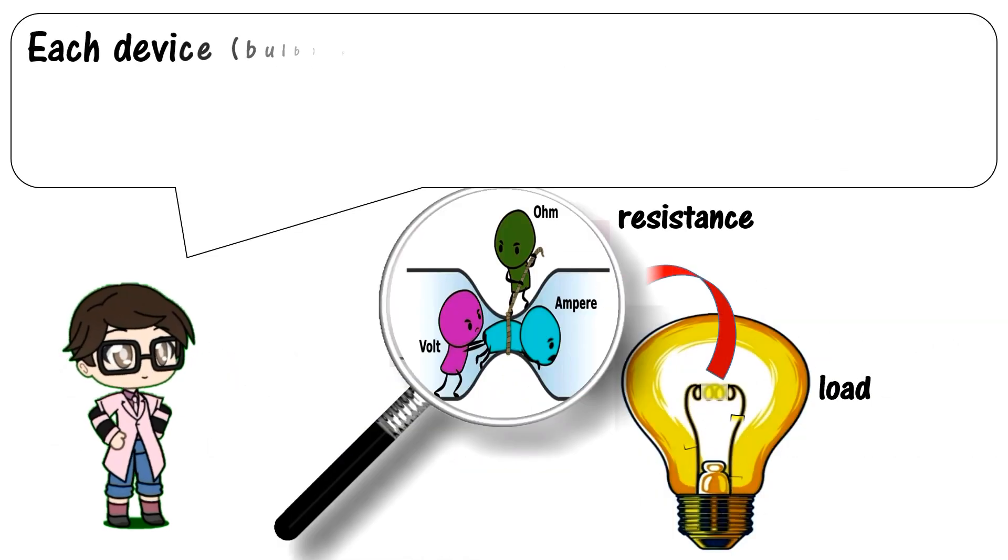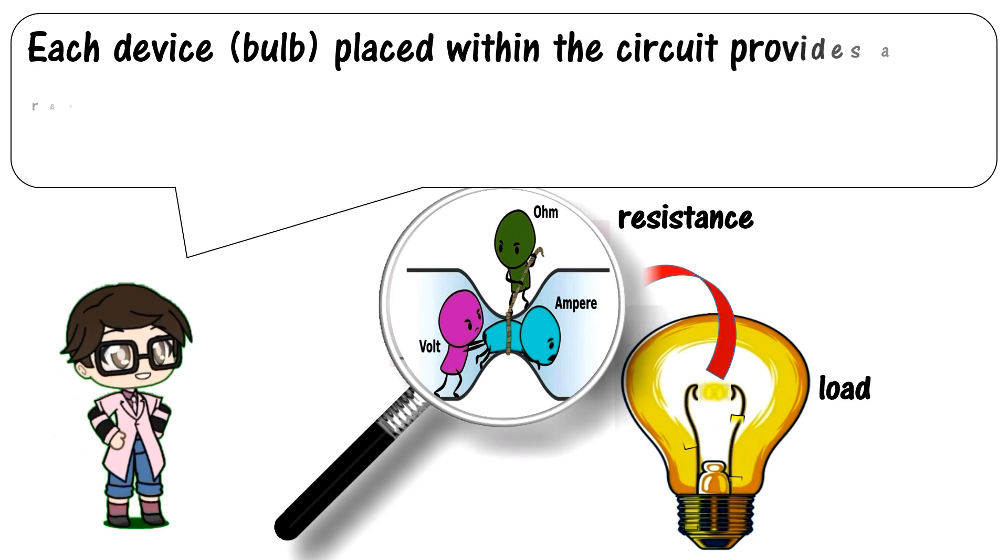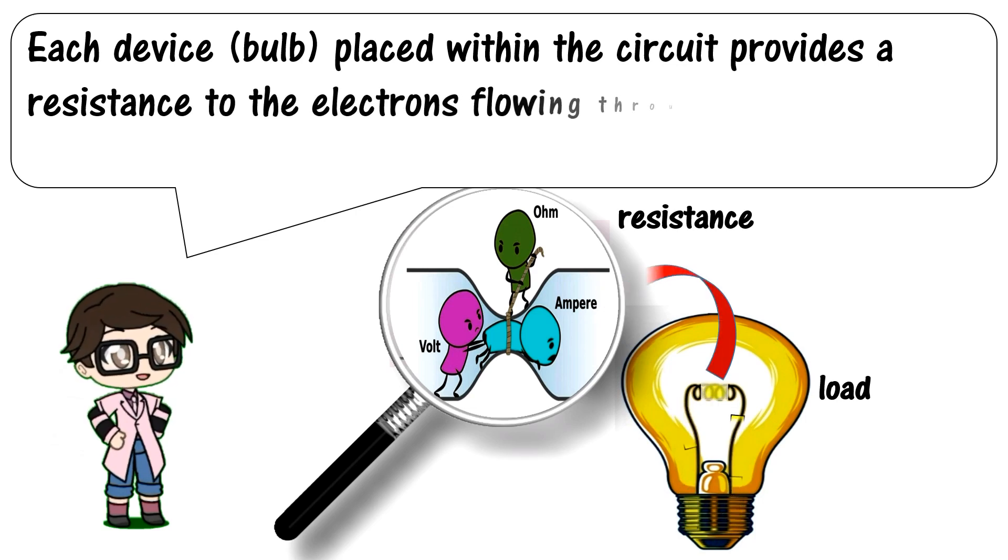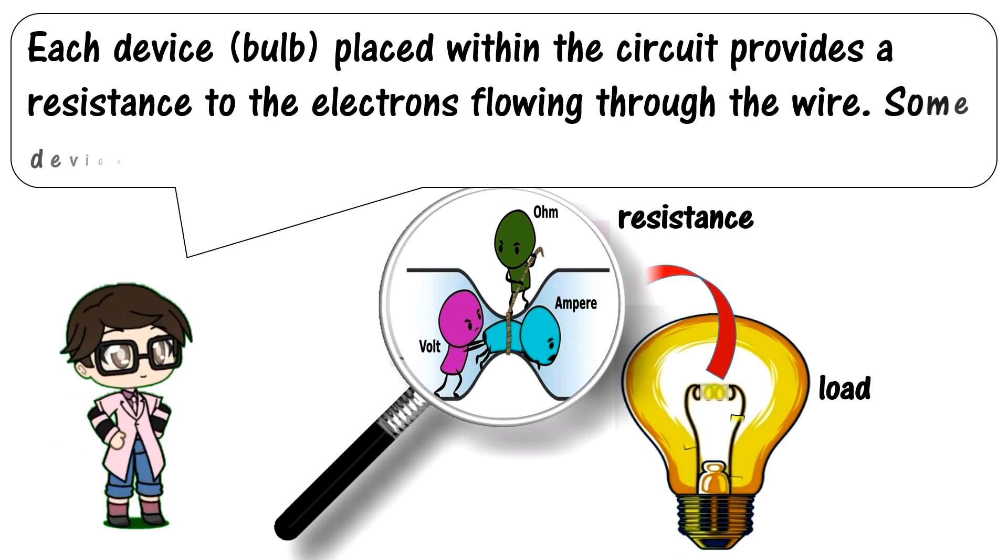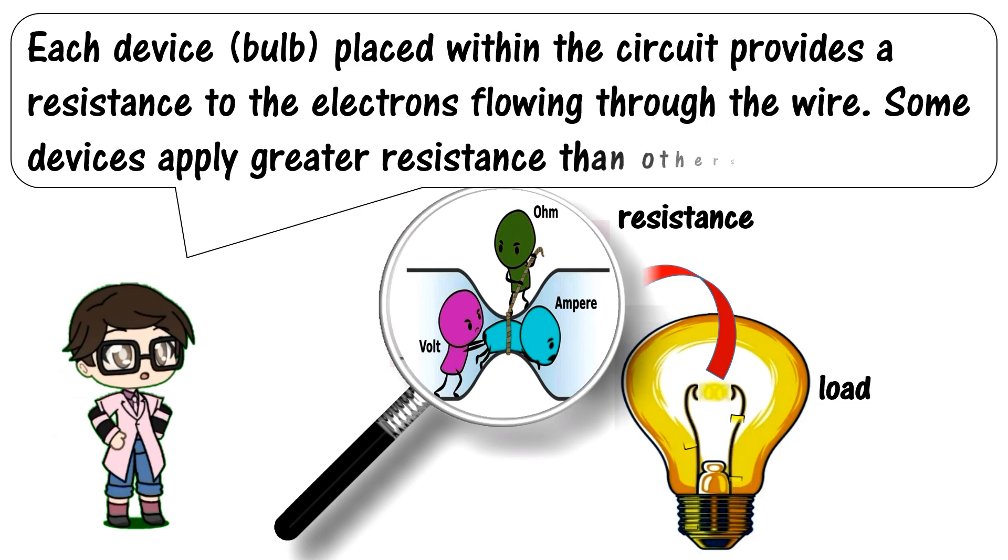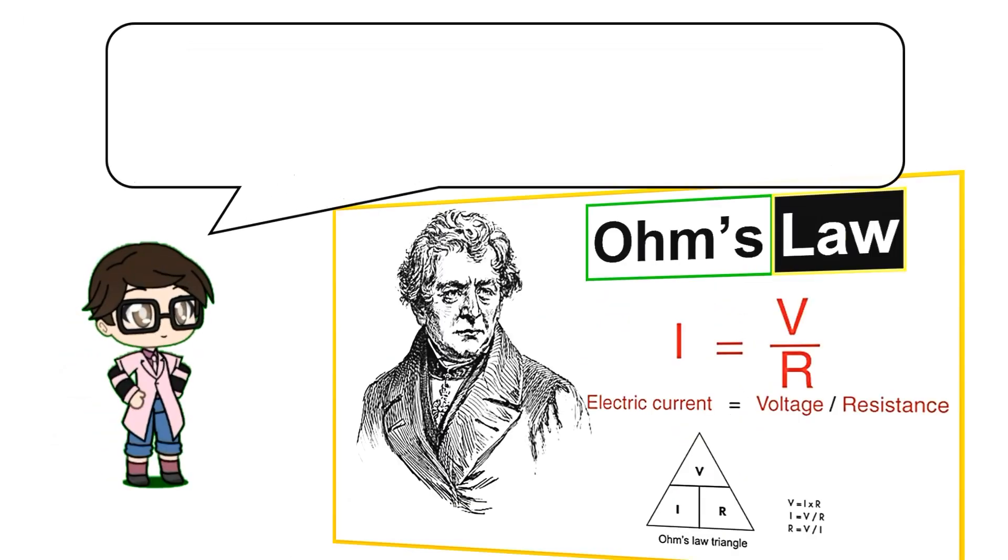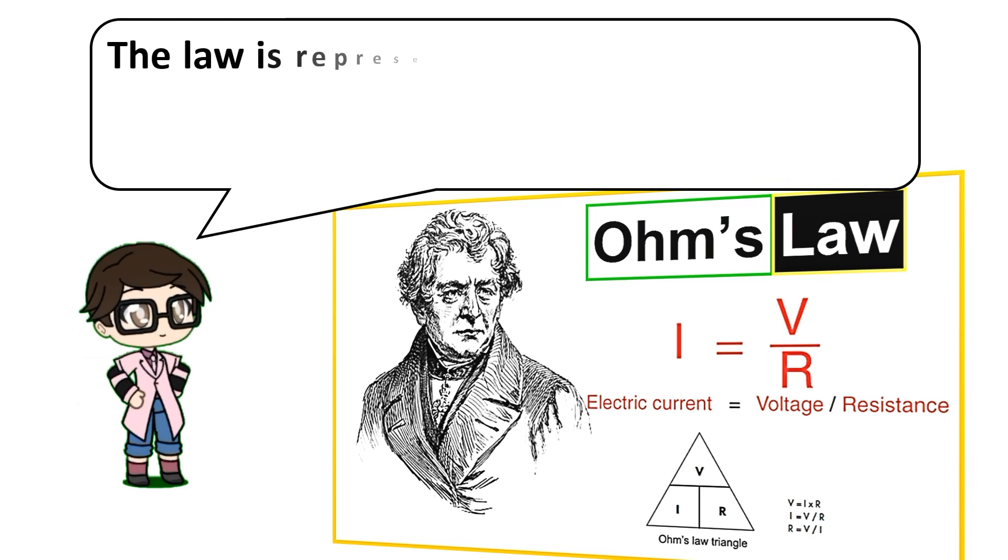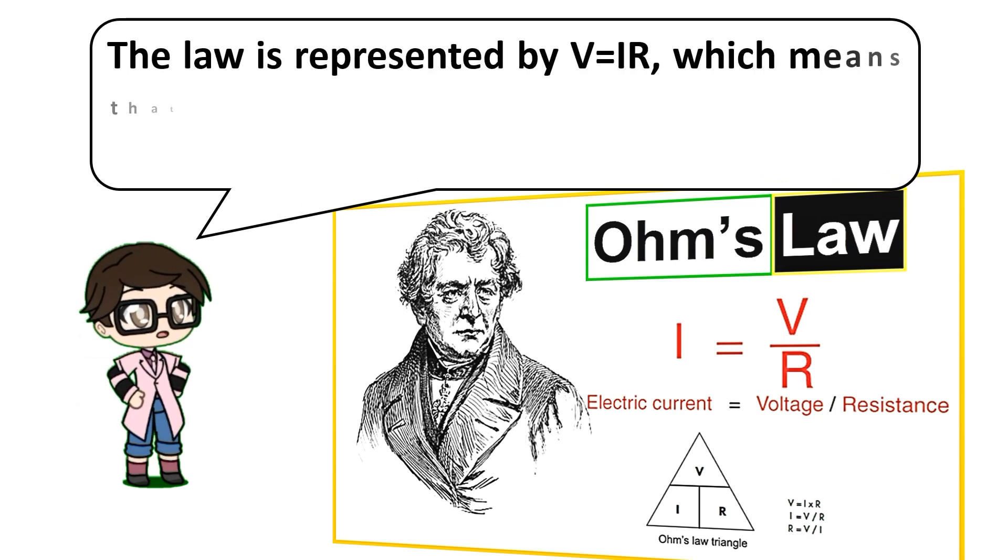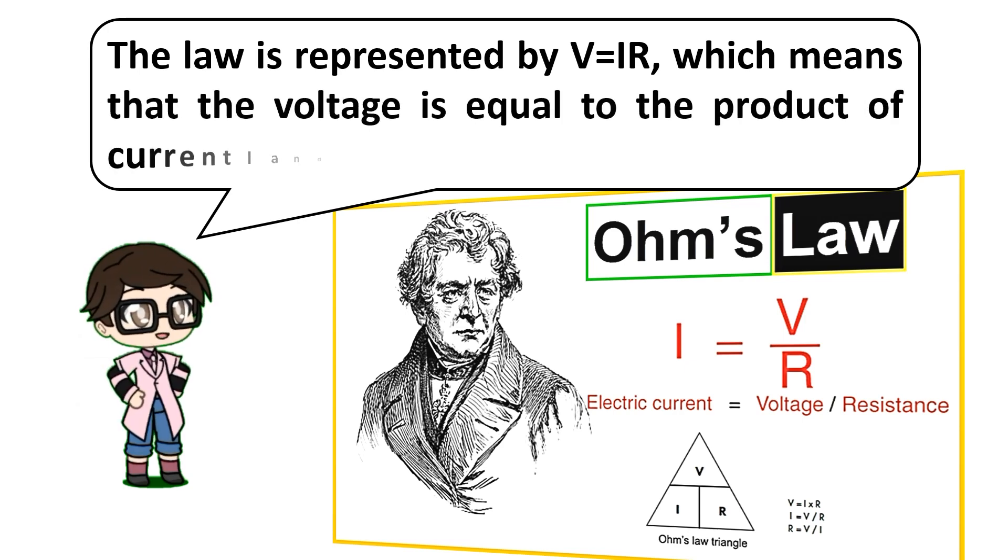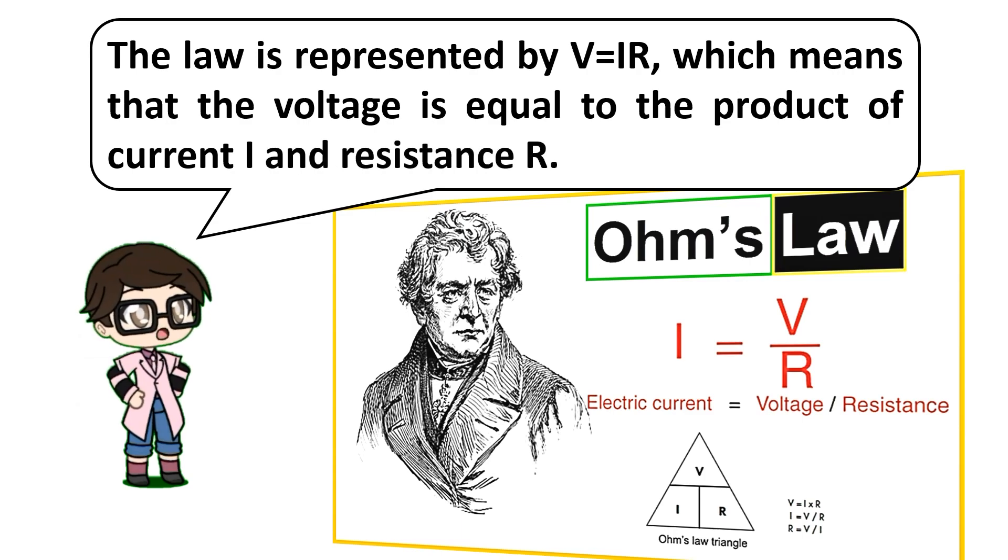Each device or bulb placed within the circuit provides a resistance to the electrons flowing through the wire. Some devices apply greater resistance than others. The law is represented by voltage equals current times resistance, which means that the voltage is equal to the product of current and resistance.